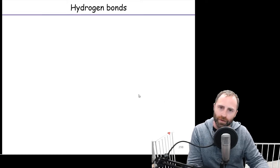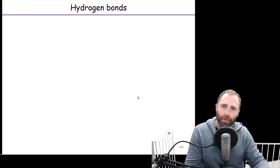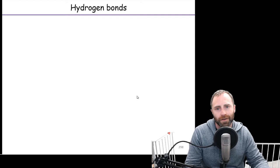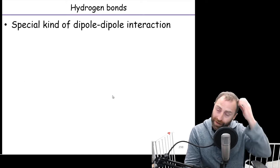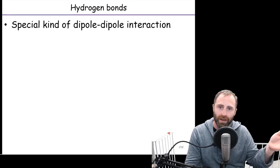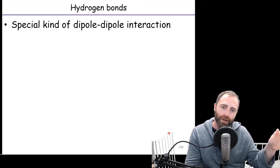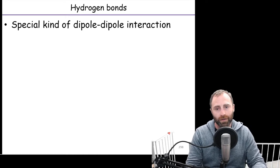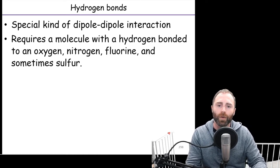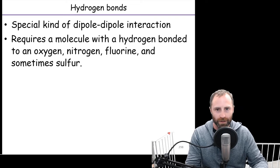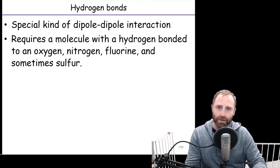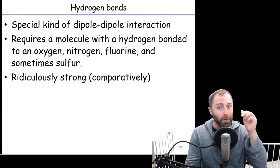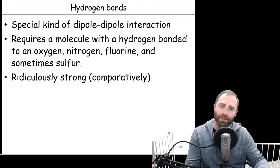We are going to finish up our discussion on intermolecular forces by starting out with hydrogen bonding. If you can keep track of the information from the previous video regarding dipole-dipole interactions, you'll be in good shape here. A hydrogen bond is really just a special kind of dipole-dipole interaction — it requires a molecule that has a hydrogen bonded to an oxygen, a nitrogen, a fluorine, and sometimes a sulfur. Compared to normal dipole-dipole interactions, hydrogen bonds are ridiculously strong.